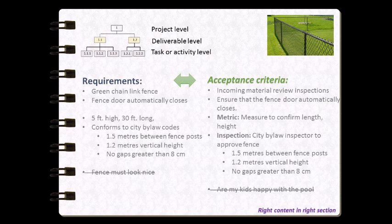Be careful to ensure every acceptance criteria has a matching requirement. For example, an acceptance criteria saying 'my kids must be happy with the pool' is outside the project scope and has no corresponding requirement, so it would not be valid. When defining requirements, make sure they are quantifiable and measurable — this makes them good test criteria. A requirement that says 'the fence must look nice' is not a good requirement because 'nice' is subjective and means different things to different people. Phrase each requirement in a quantifiable way.